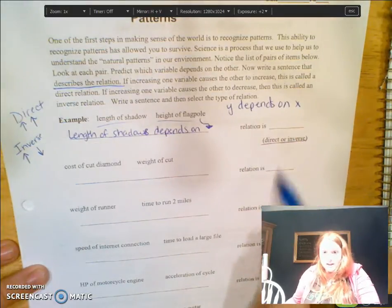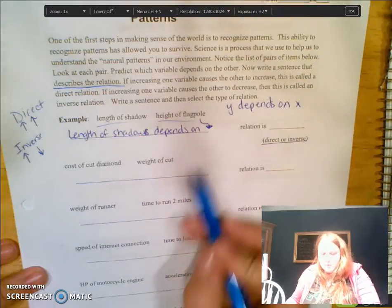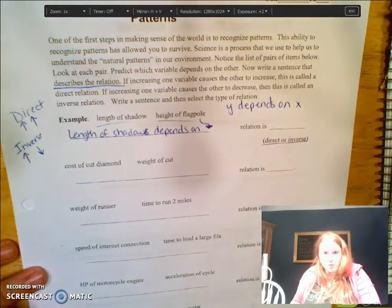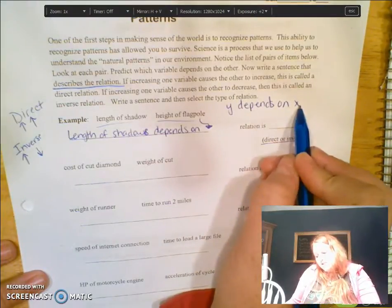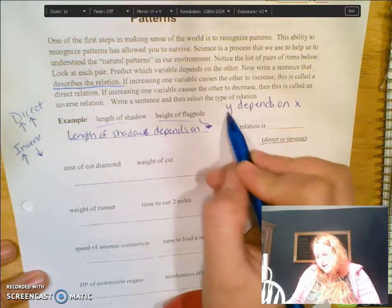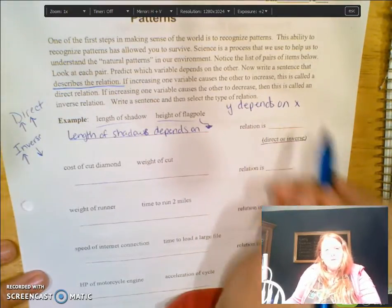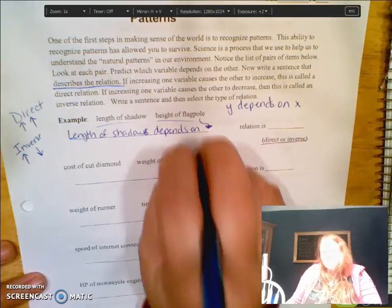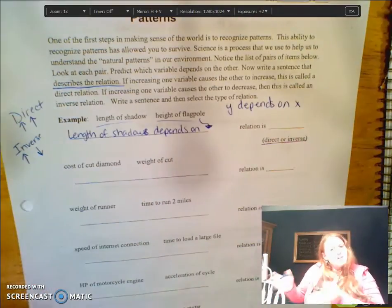So we always know that Y is going to depend on X, so your dependent variable depends on your independent variable. Now remember, your independent variable is what you can control, and your dependent variable changes based on that.